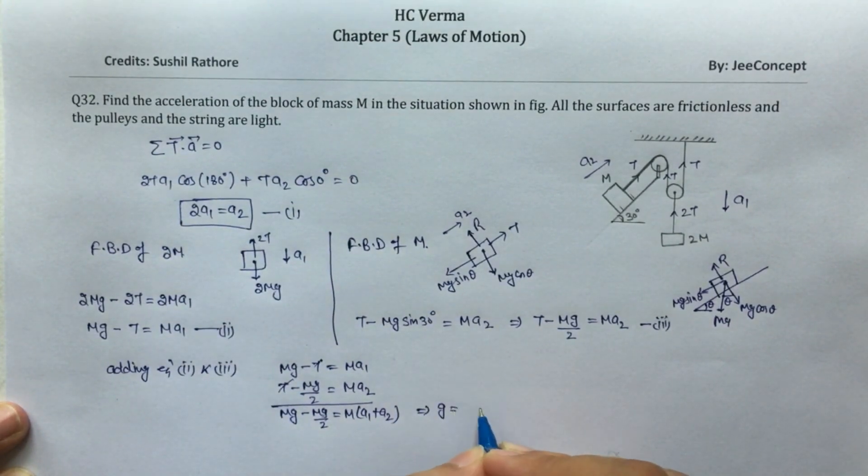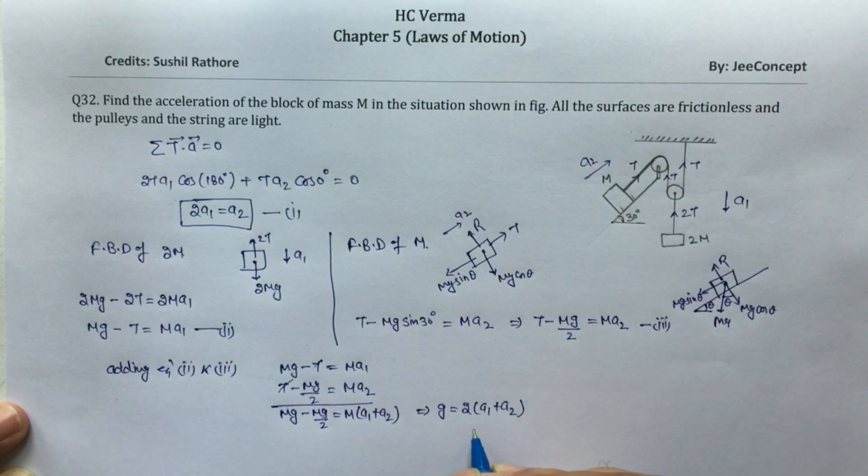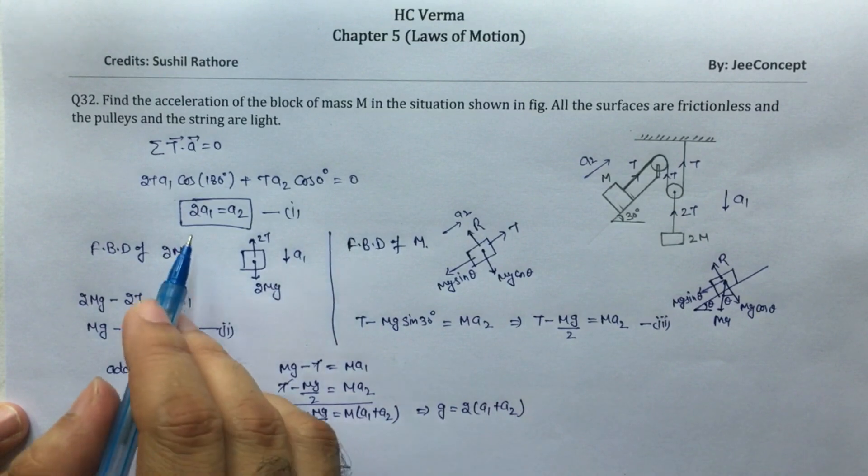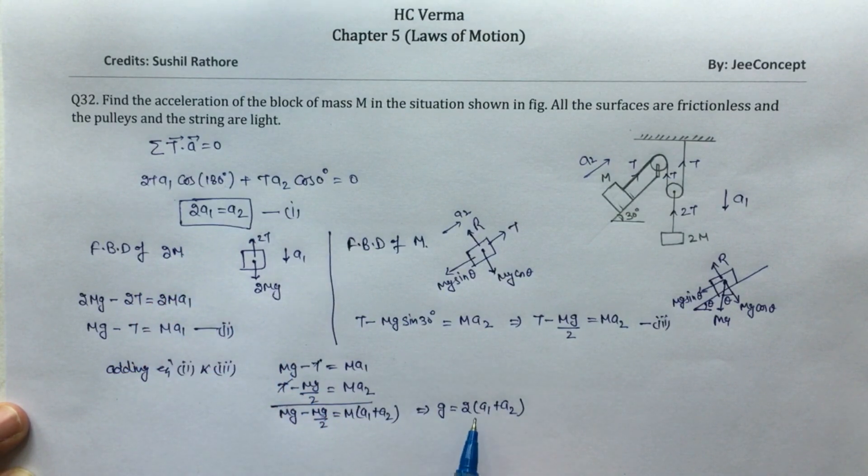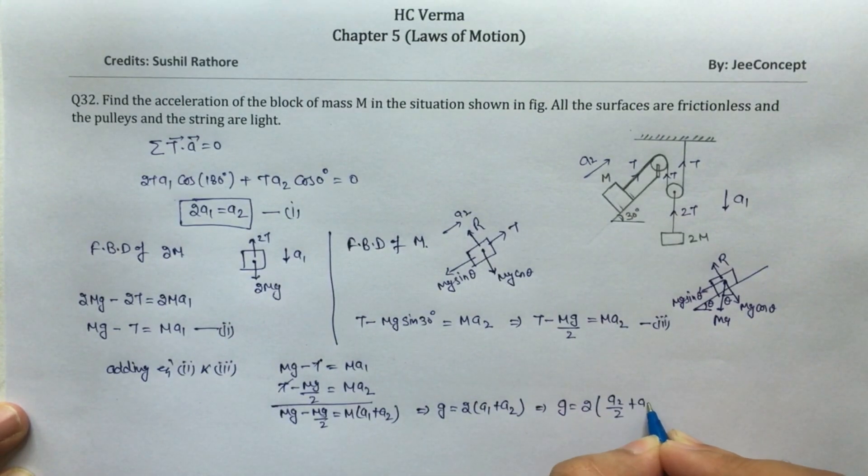Now twice of a1 is a2. So we'll put the value of a1 in this equation. This will become g equals twice of a2 by 2 plus a2.